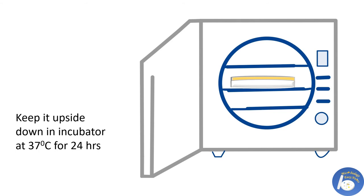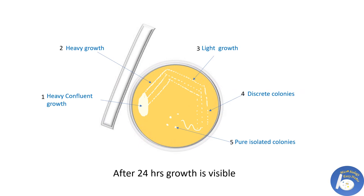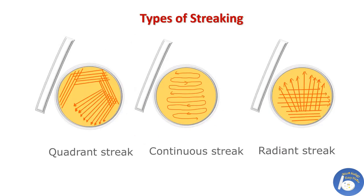After 24 hours, take out the plate and observe the growth. The first section shows heavy confluent growth. The second section shows less heavy growth. The third section shows light growth. In the fourth section, we can see discrete colonies, and at last we can see pure single colonies. These colonies can be used for further processes. This is how, by using the streak plate method, we can obtain single pure colonies.